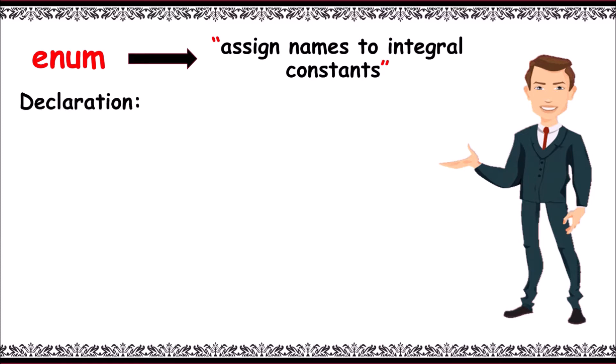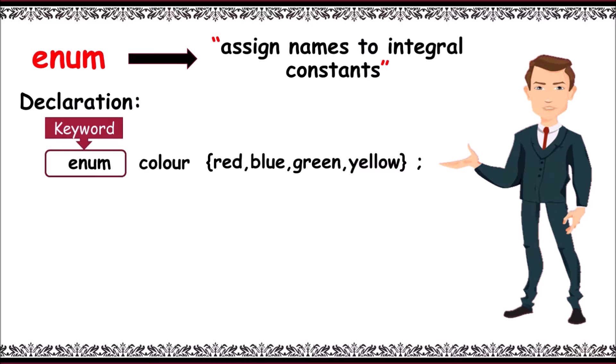Let me say it with the help of declaration: enum color in braces red, blue, green, yellow, close the braces. Here enum is keyword and color is data type, and its values are red with state 0, then blue with state 1, green with state 2, and yellow with state 3.